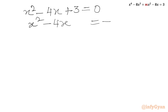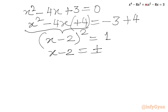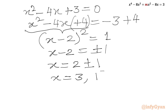For x² minus 4x plus 3 equals 0: x² minus 4x equals negative 3. Adding 4 to both sides: (x minus 2)² equals 1. Taking the square root: x minus 2 equals plus or minus 1. Adding 2: x equals 2 plus or minus 1. So the first two solutions are x equals 3 and x equals 1.